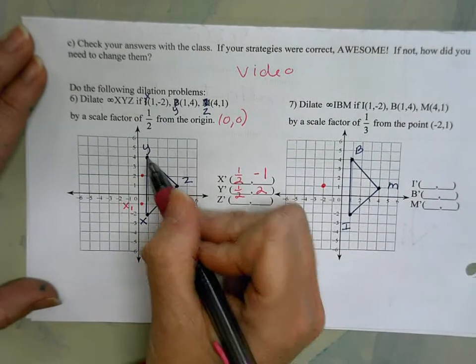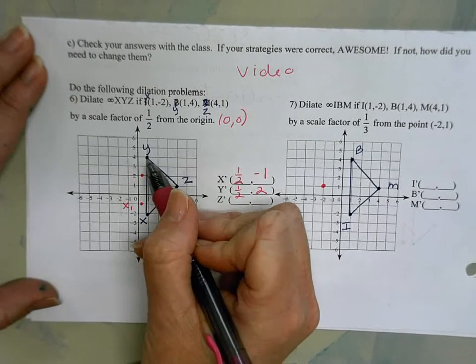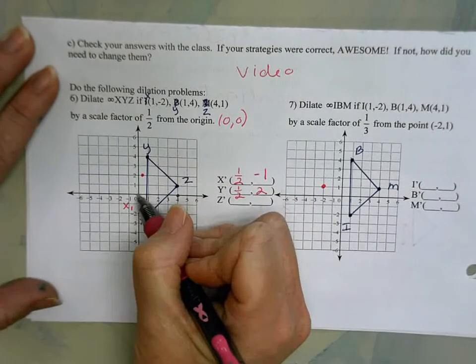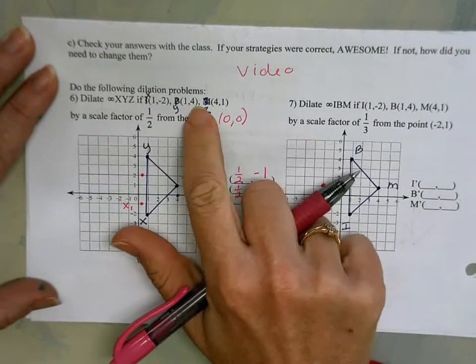to get to Y from the origin I'm going over 1 and up 4. If I want to use a scale factor of 1/2, then I'm gonna go over 1/2 and up 2. So I'm multiplying by the scale factor or I'm counting half the distance.